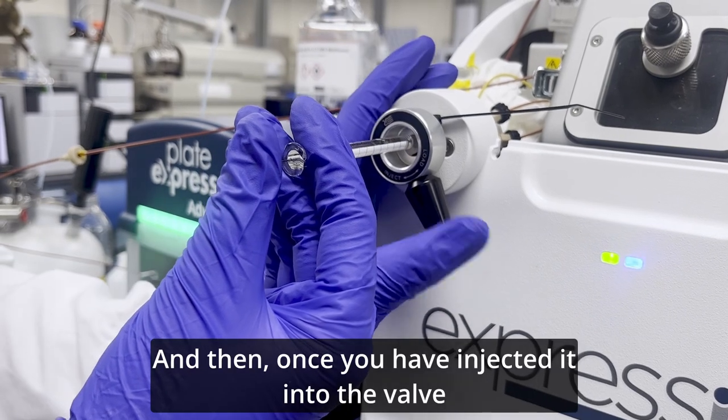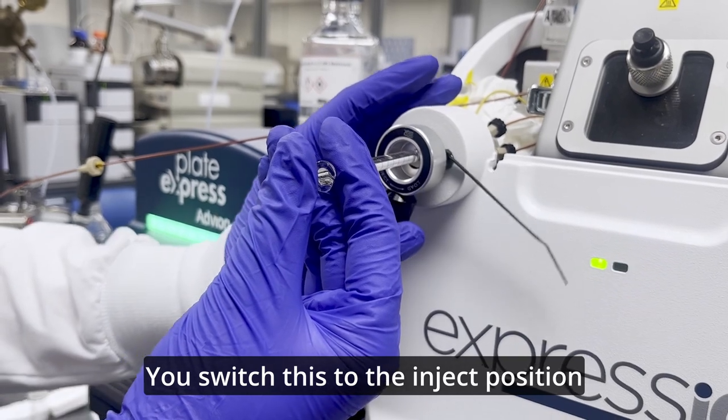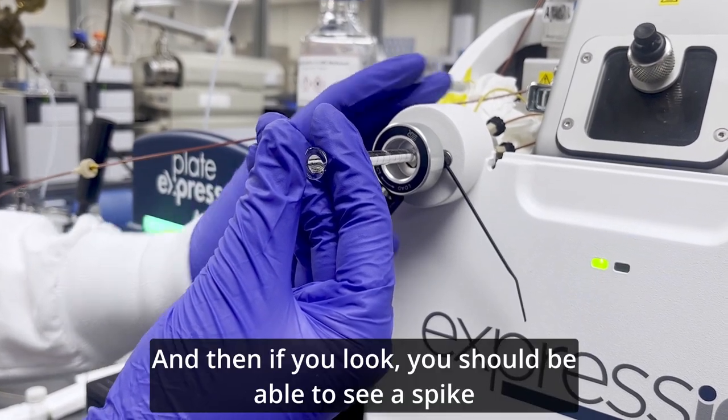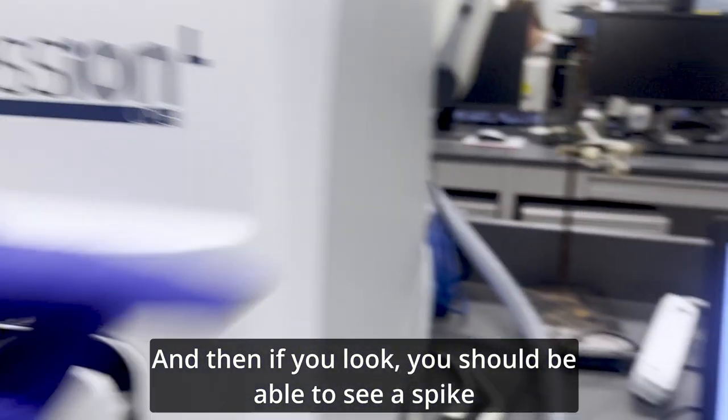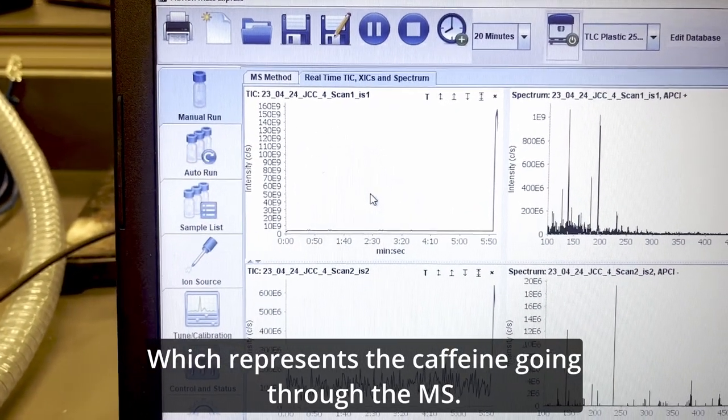And then once you have injected it into the valve, you switch this to the inject position. And then if you look, you should be able to see a spike, which represents the caffeine going through the MS.